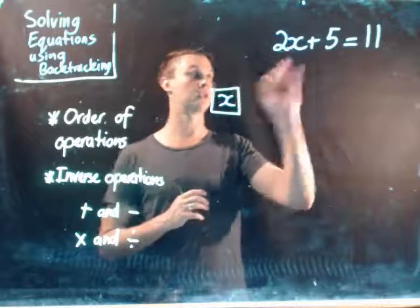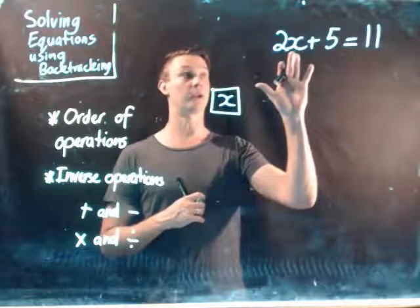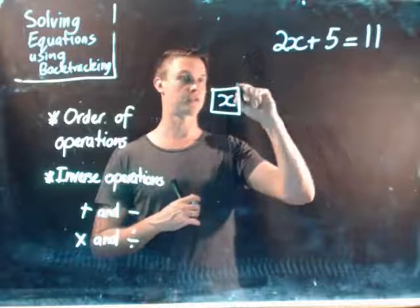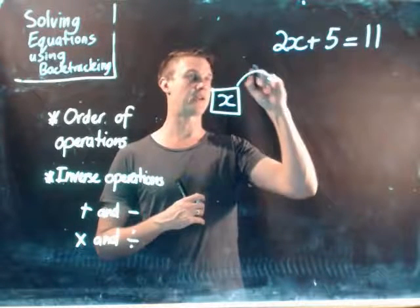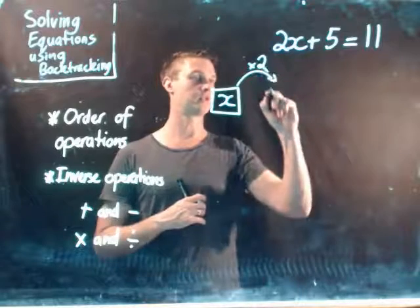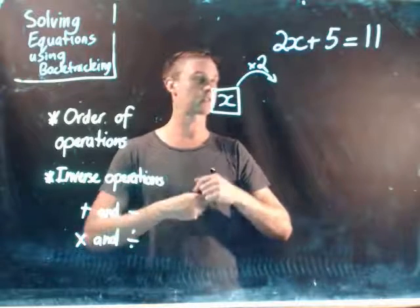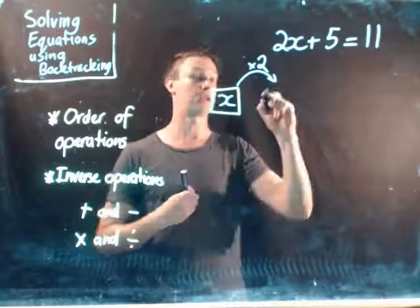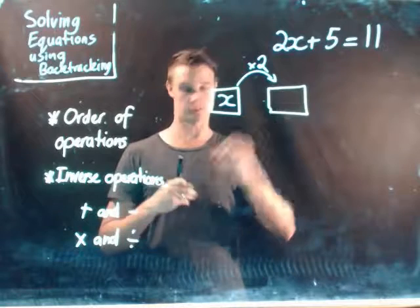So what we'll do here is I know from the order of operations that I'm going to be multiplying the pronumeral by 2 first. So what I do, I create an arrow, I'm going to times it by 2 and then in the next box, we create how we've now further developed our equation.